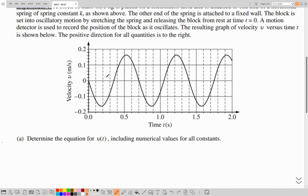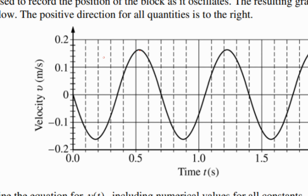This is v versus t. Whenever we have v versus t, we can directly start extracting some physical quantities, one of them being the period, which is the time taken between two consecutive peaks. In this case it's easy to count from the center: choose a point, skip another point, and choose the next. If the grids are divided into 0.5, then each one would be 0.1, so the period is directly 0.7. The maximum velocity: if this axis is divided to 0.1 with 1, 2, 3, 4, 5 steps to reach 0.2, then each one would be 0.02, making the maximum velocity 0.16.